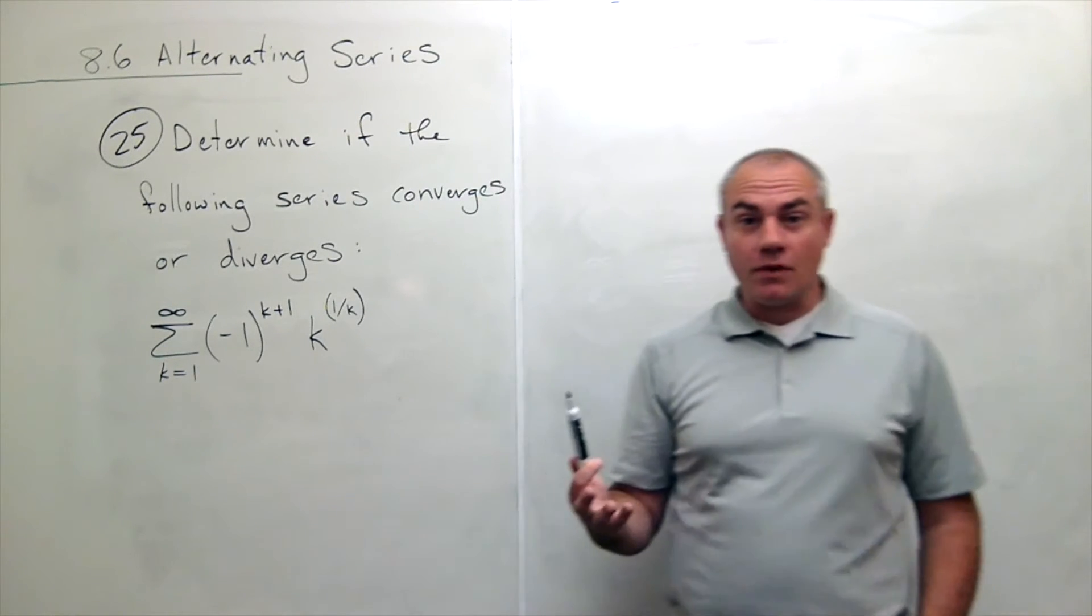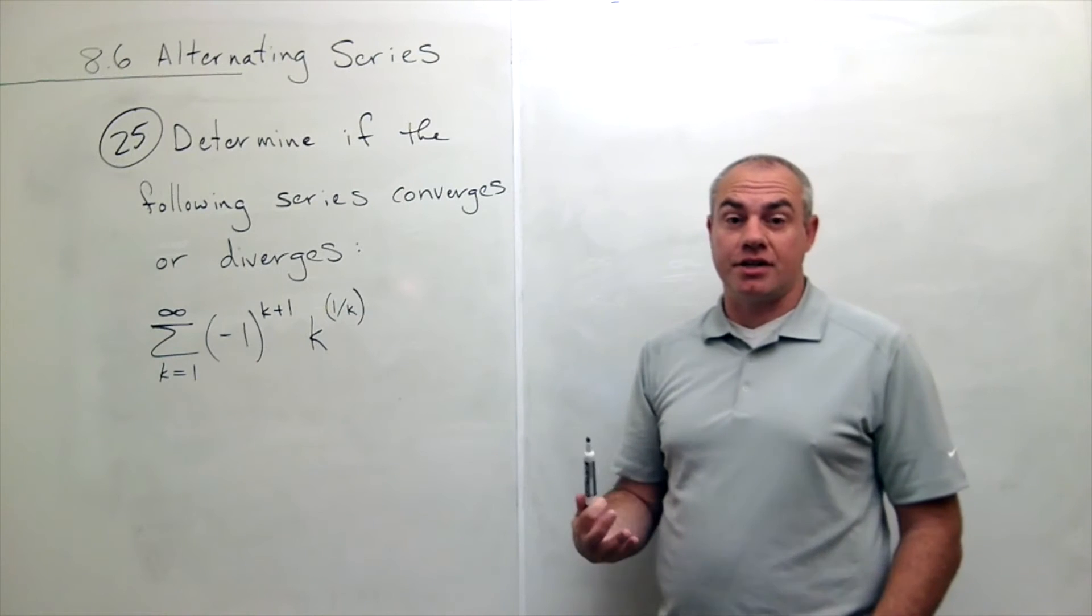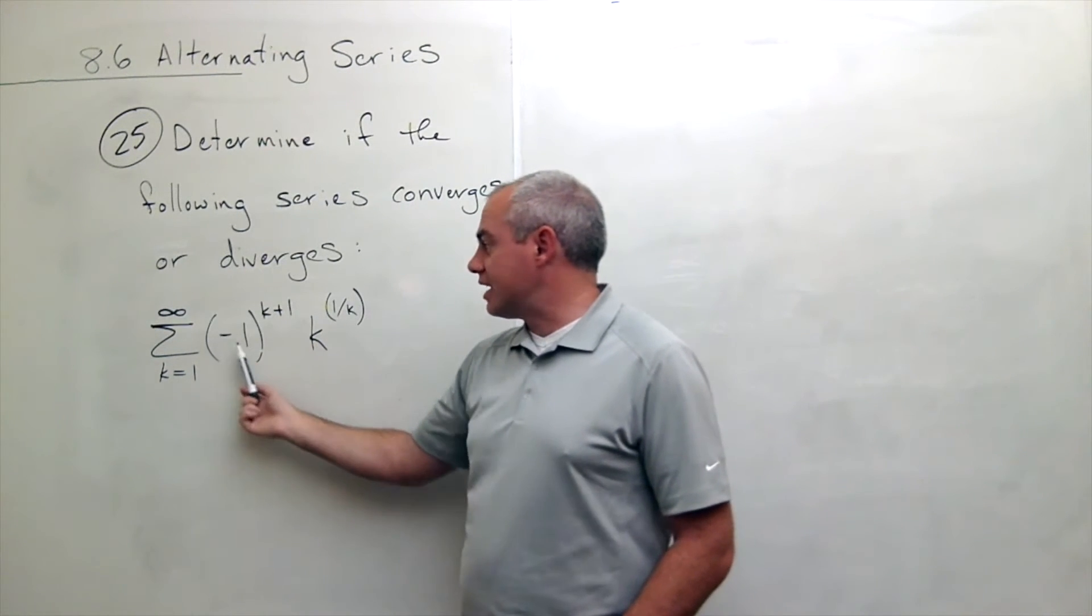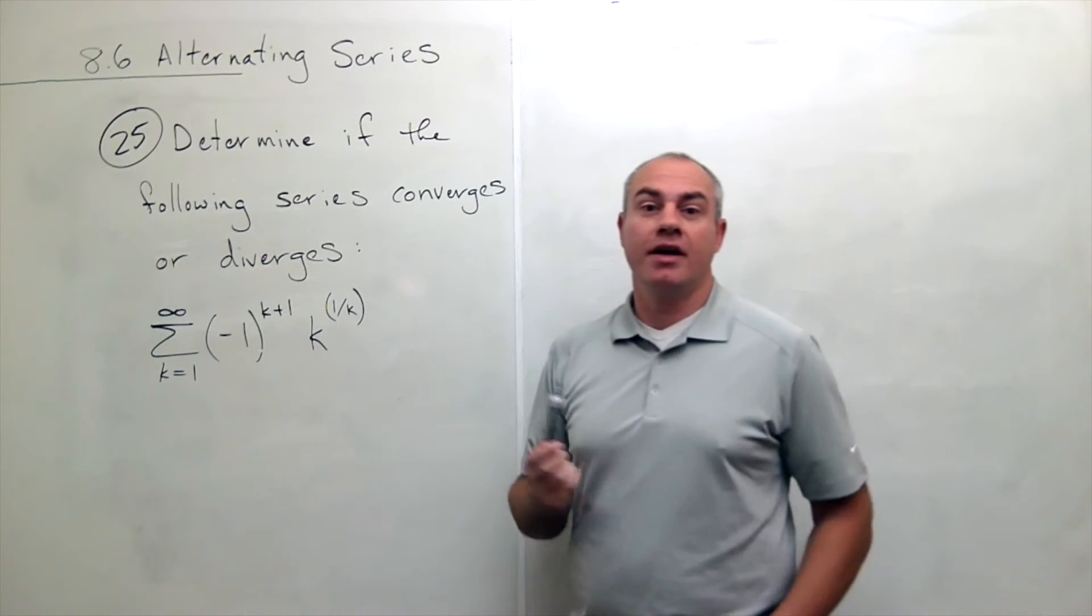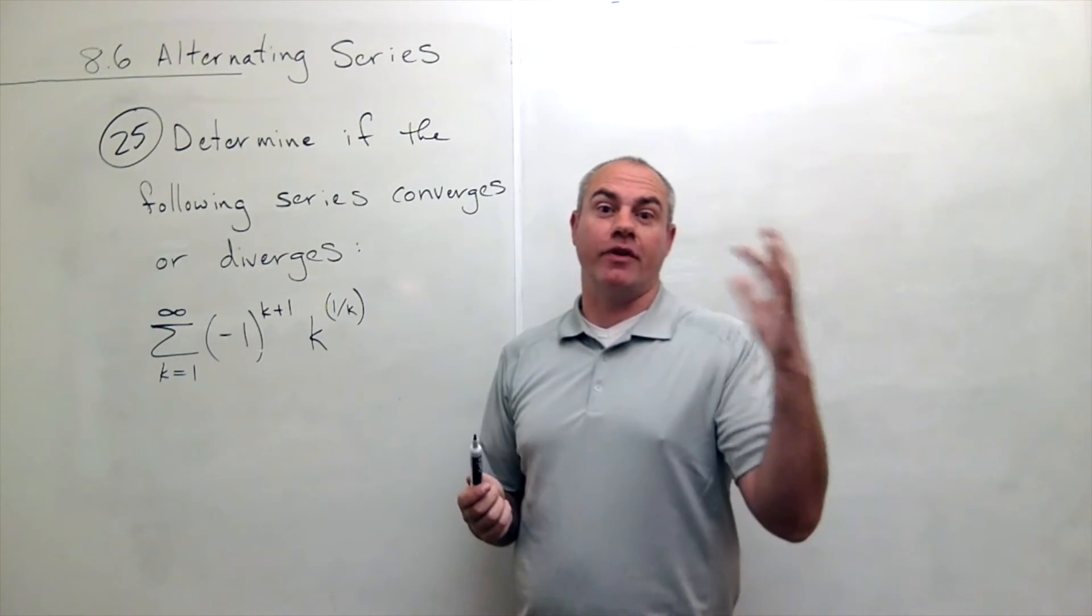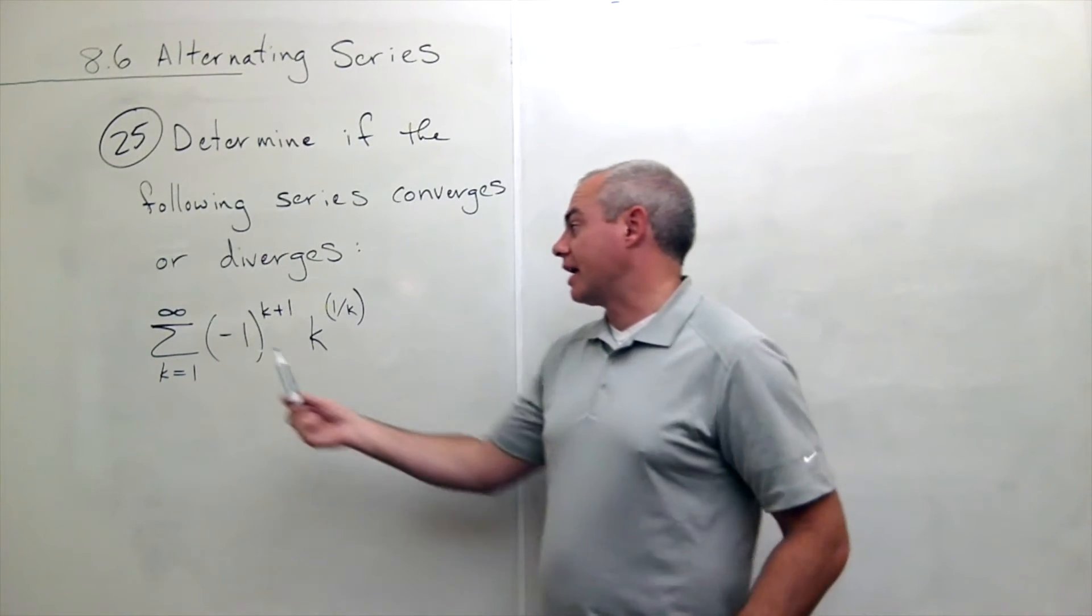So how do we do an alternating series test? We see this thing alternates and this negative 1 to the k plus 1, that's the thing that makes it flip-flop back and forth between negatives and positives.